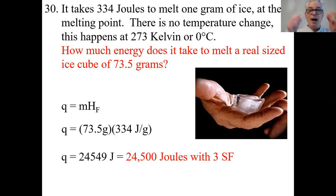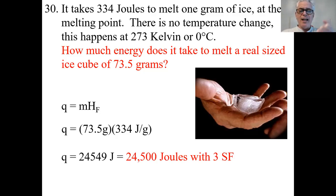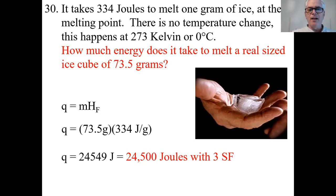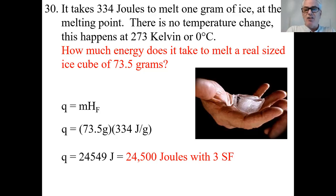Think about it: if you have an ice cube that fits in your hand — 73.5 grams — your body could easily generate this much energy. You could hold it in your left hand, then your right hand, then put it down the back of your shirt and get a little chilly, but your body could easily generate about 25,000 joules to melt that ice cube.